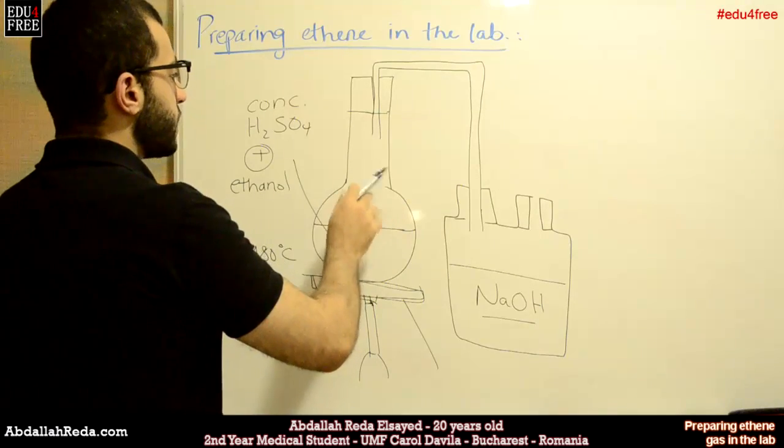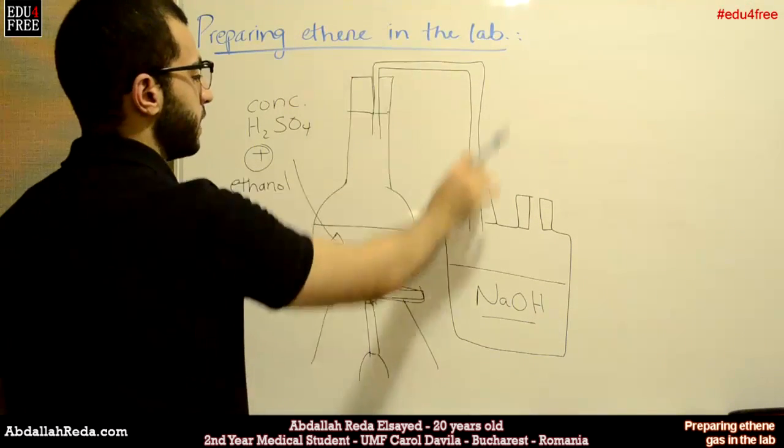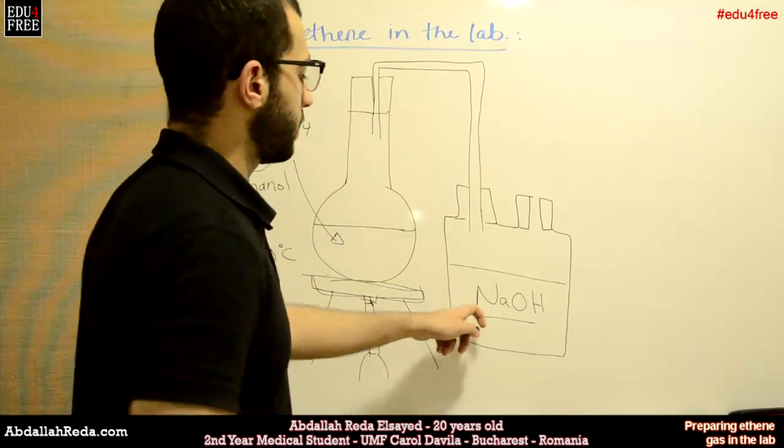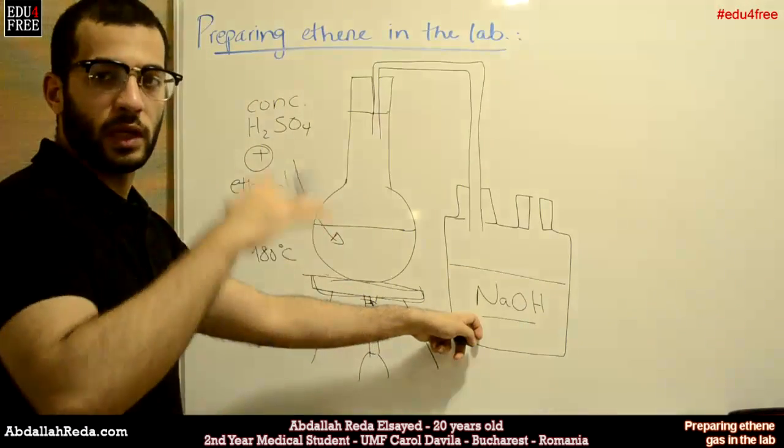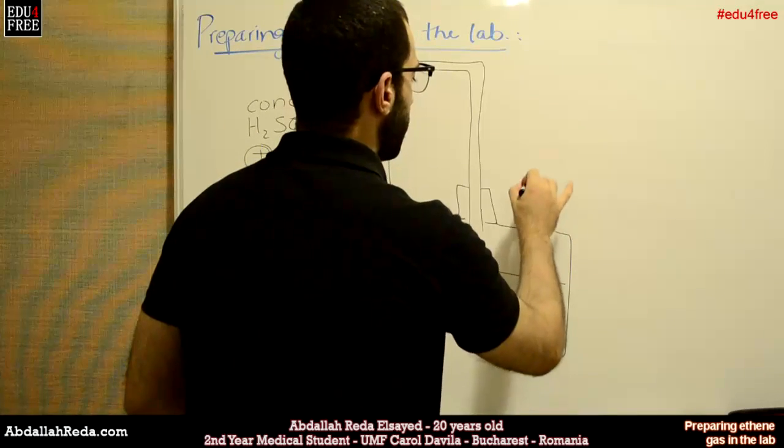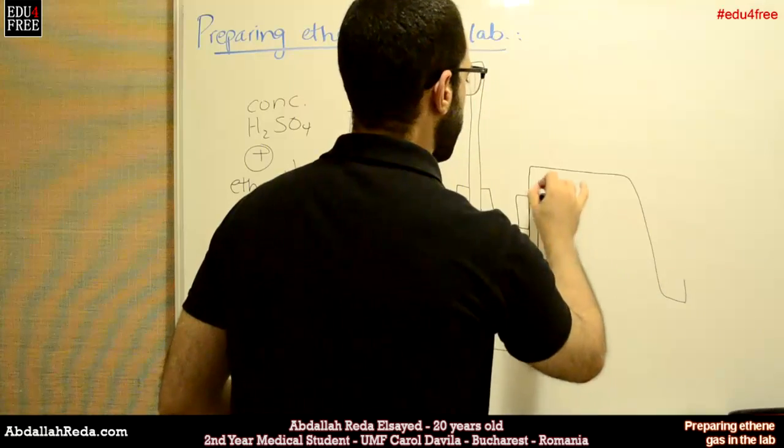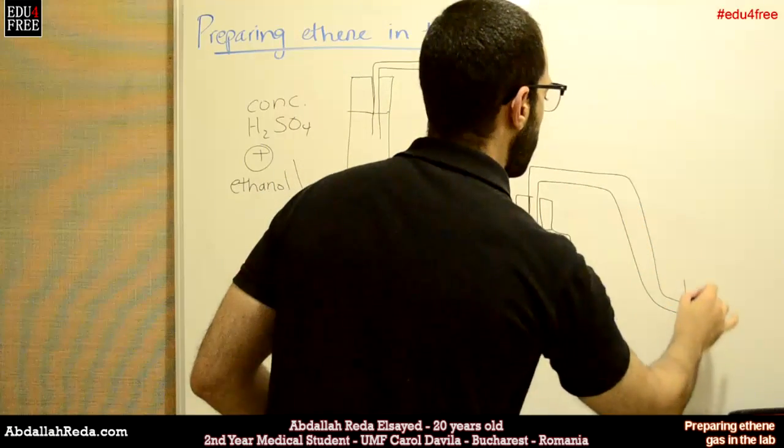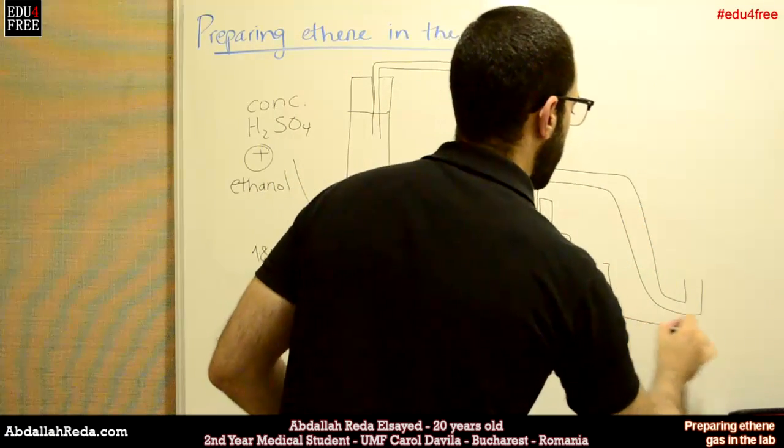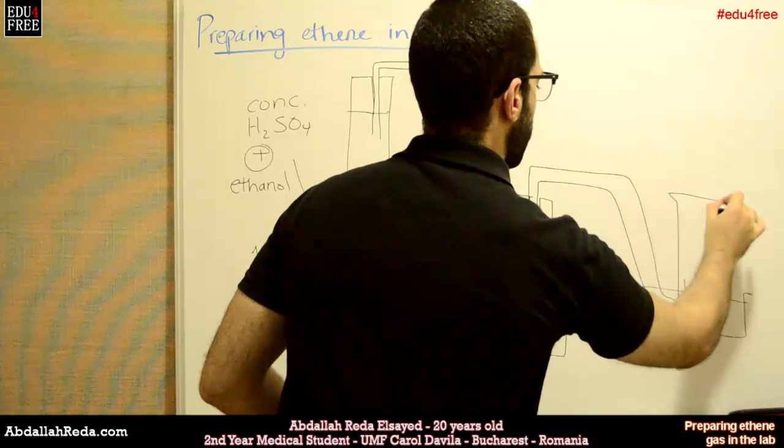The resulting compounds will go through this connecting tube, pass over the sodium hydroxide to be neutralized and decrease the acidity. Then we'll have another connecting tube going through a beaker containing water, like this, and we'll have an inverted test tube.